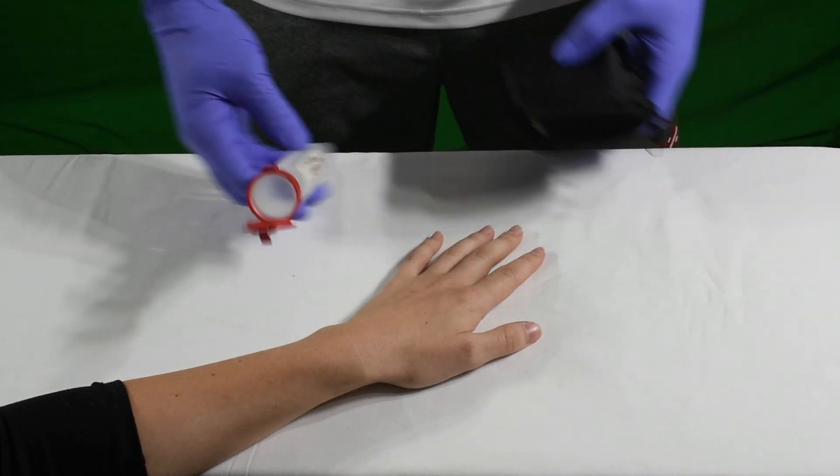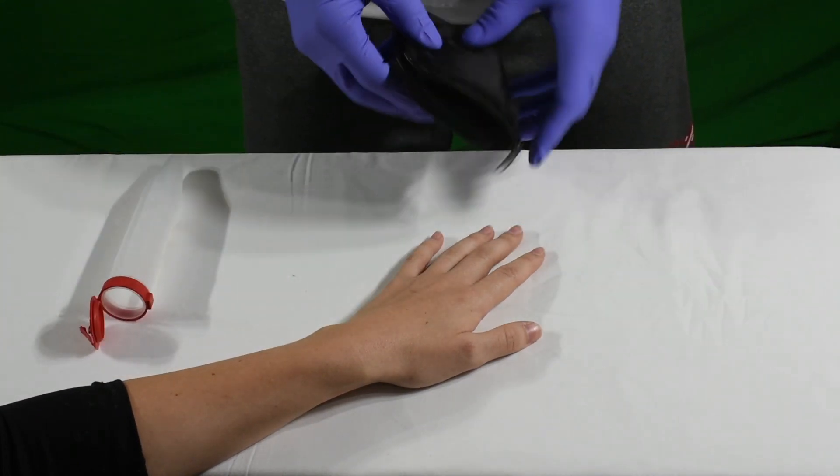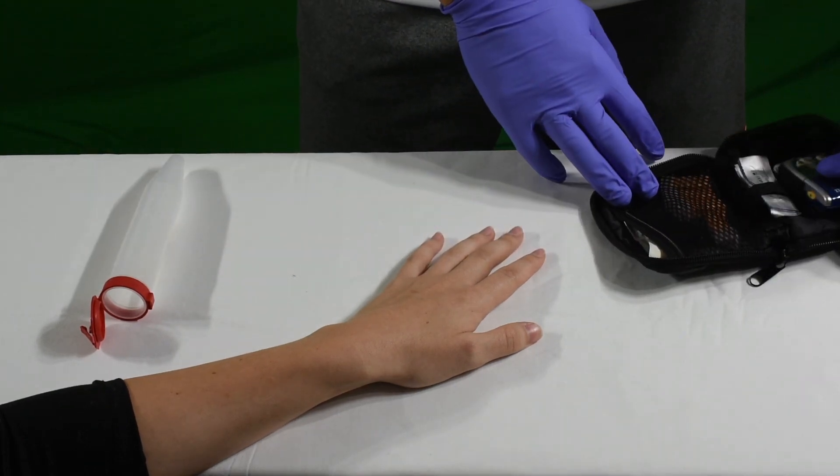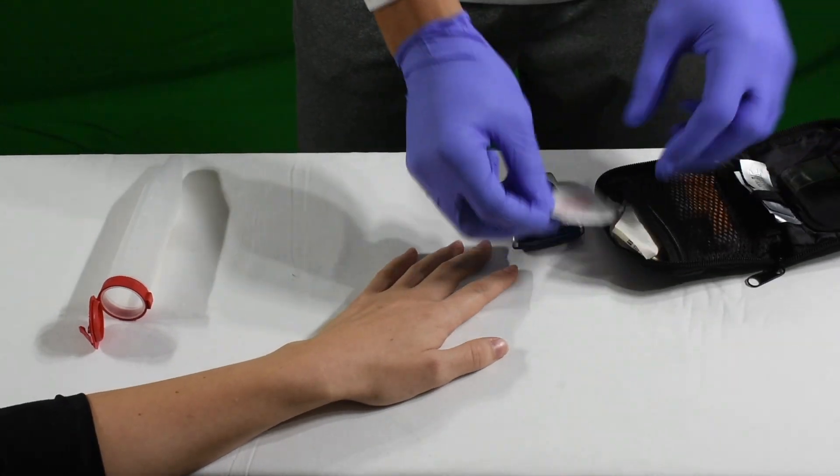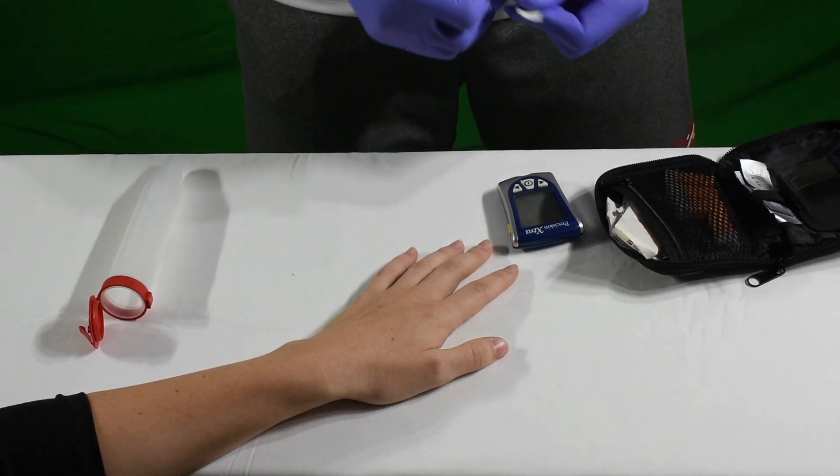What you want to do is gather your gear. You want to get a sharps shuttle, open up your equipment, take out the monitor, take out an alcohol prep, and get it ready to go.